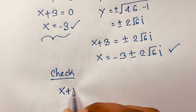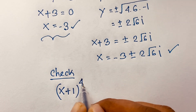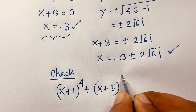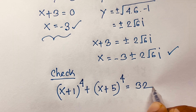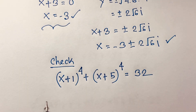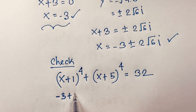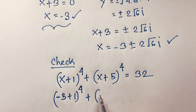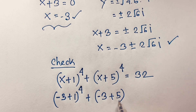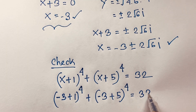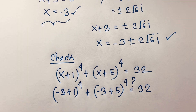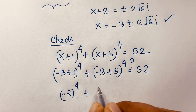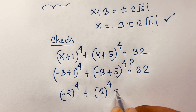Let's verify with x = −3. Substituting into (x+1)⁴ + (x+5)⁴ = 32: (−3+1)⁴ + (−3+5)⁴ = (−2)⁴ + (2)⁴ = 16 + 16 = 32. This confirms x = −3 is correct.